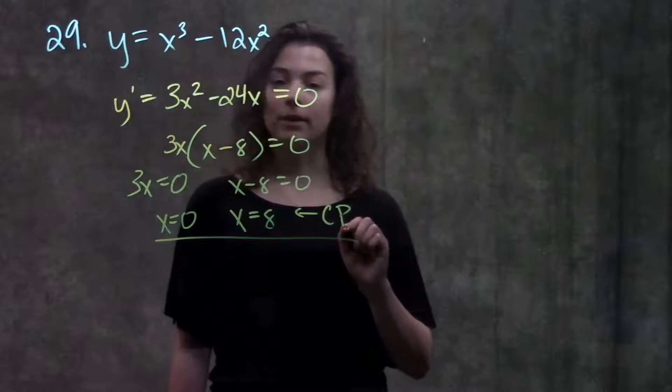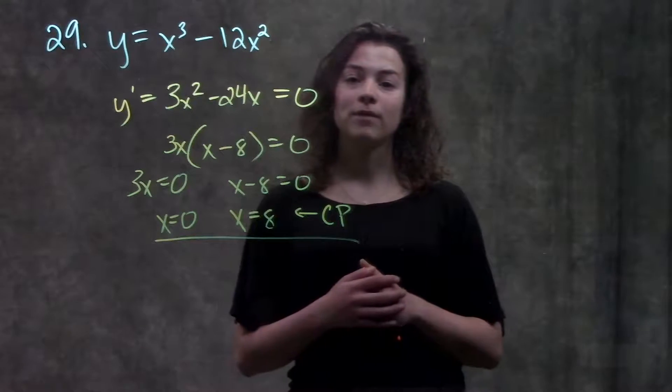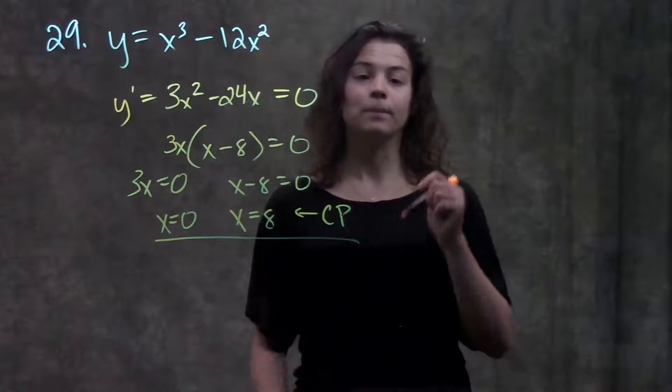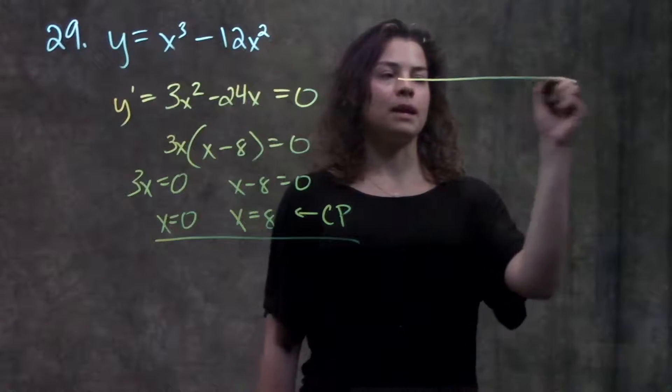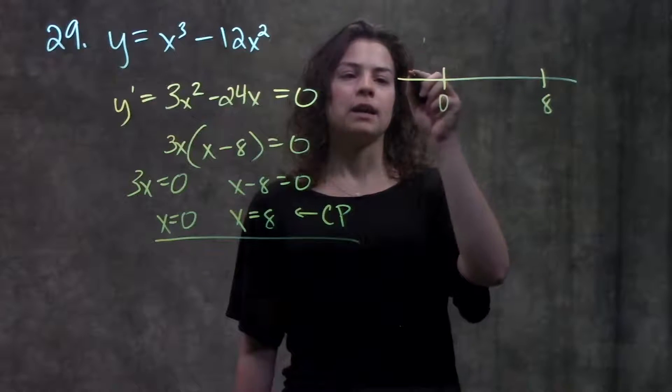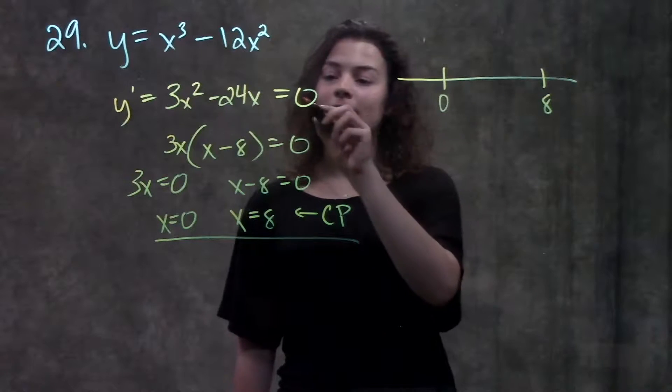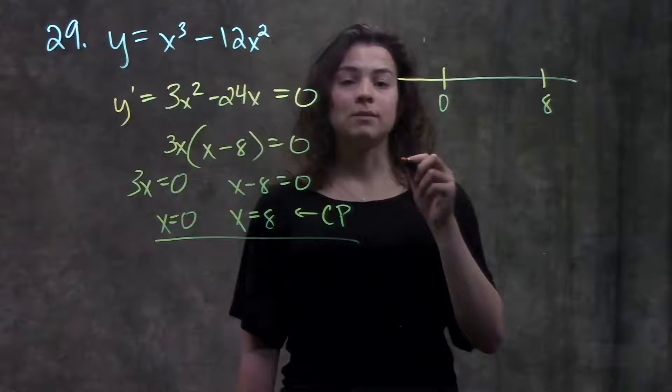The second point, I want to find where the function is increasing and decreasing. In order to do that, I'm going to make a number line, put on my critical points, and I'm going to check an x value in each of these intervals, plug it into my derivative function, and see what the sign is.